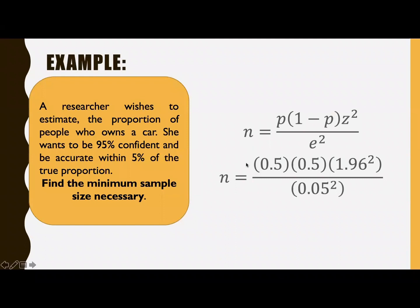So we have here, since there is no prior knowledge given, we can assign, very safe to have 50% proportion and 50% for 1 minus P. And then the equivalent to 95% confidence is 1.96 standard score, and the margin of error is 0.05 squared.